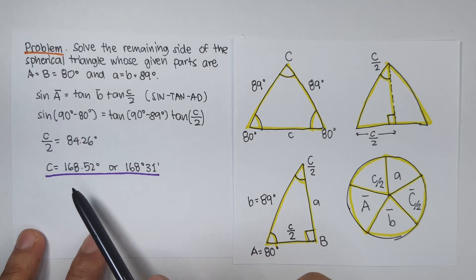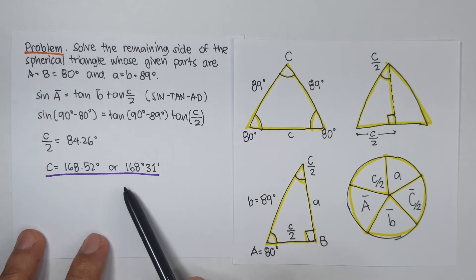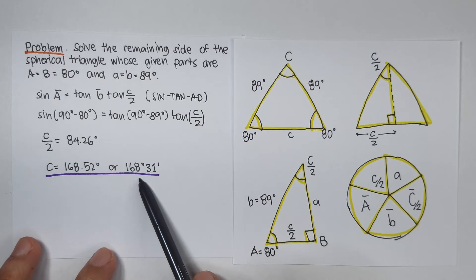Therefore, C is equal to 168.52 degrees or that's 168 degrees 31 minutes.